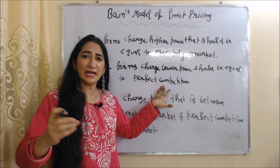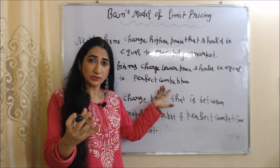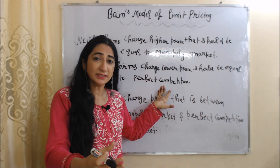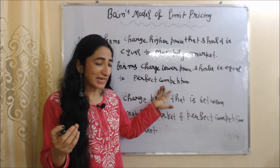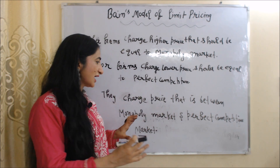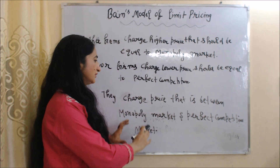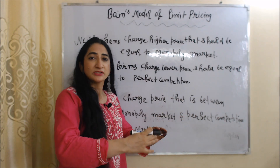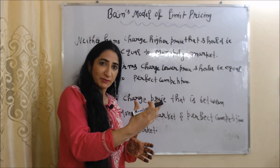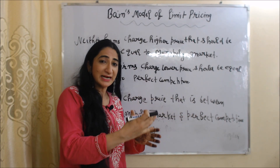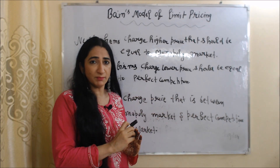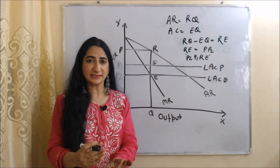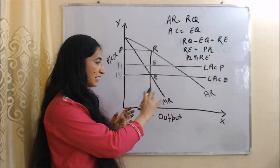On the other hand, if they charge a price so low that it equals perfect competition, their profit will fall significantly. That is why they charge a price between the monopoly market and perfect competition market, so that they can prevent entry of new firms and still earn some profit. Now we will clearly understand this theory with the help of a diagram.